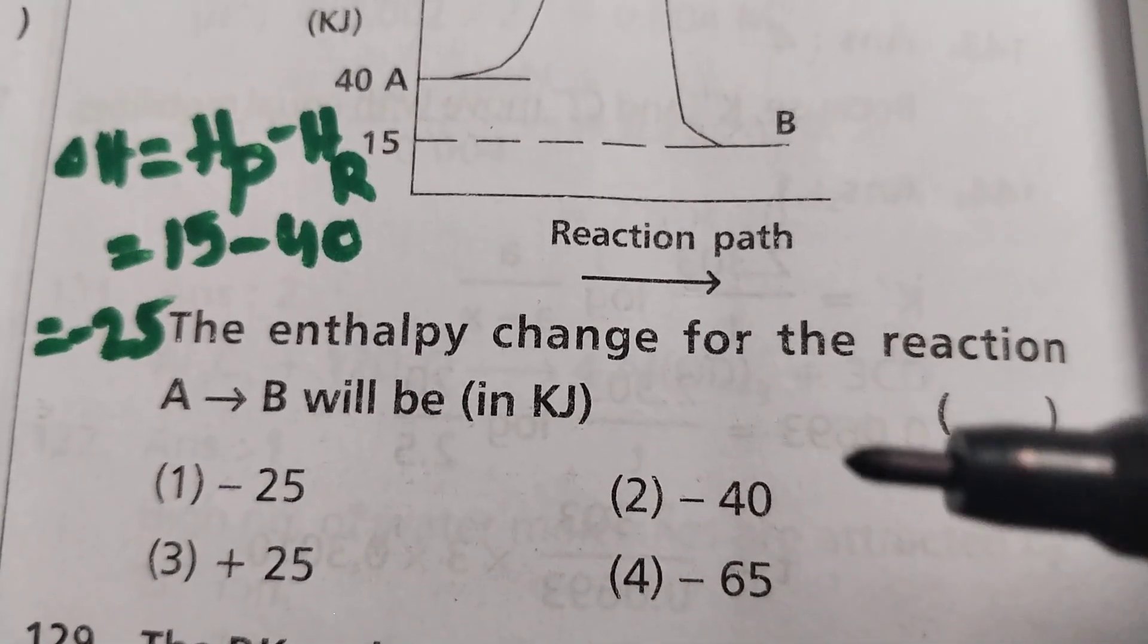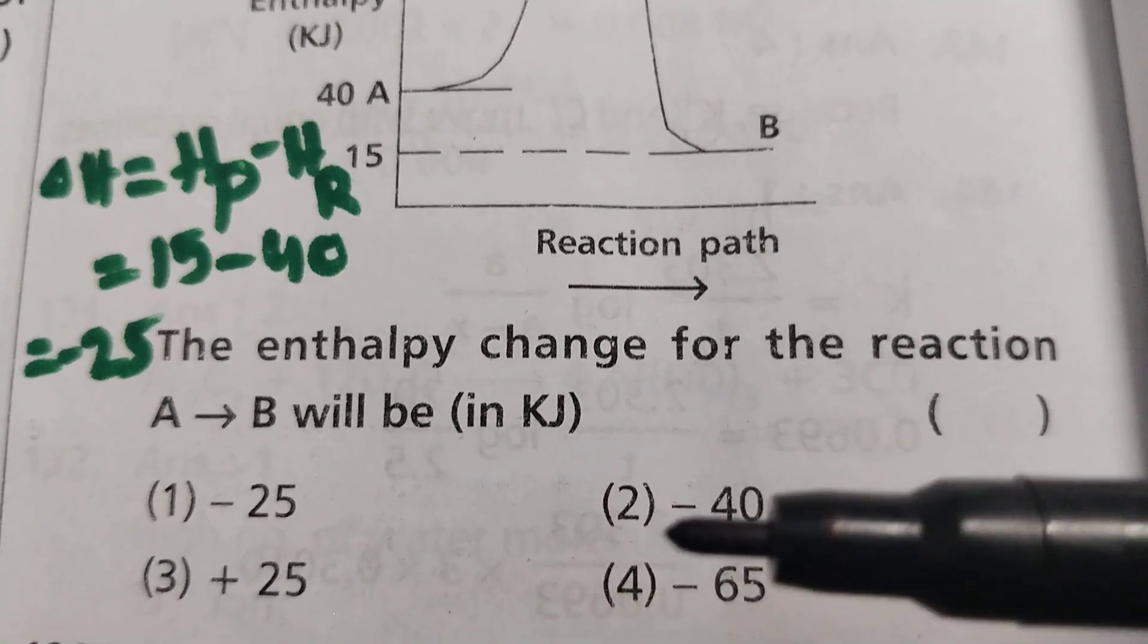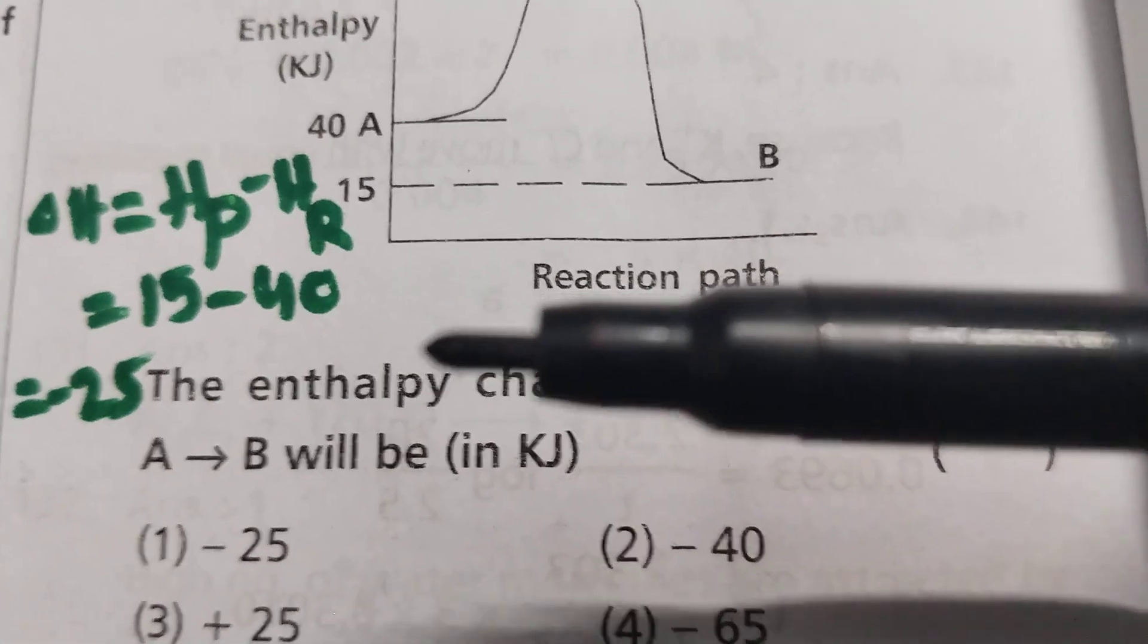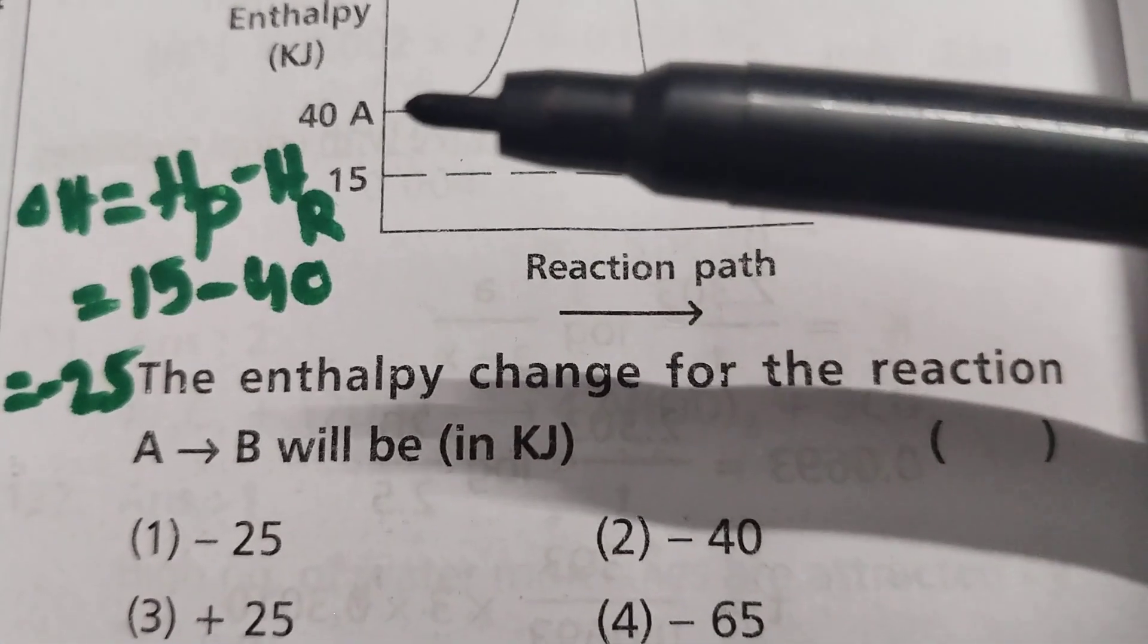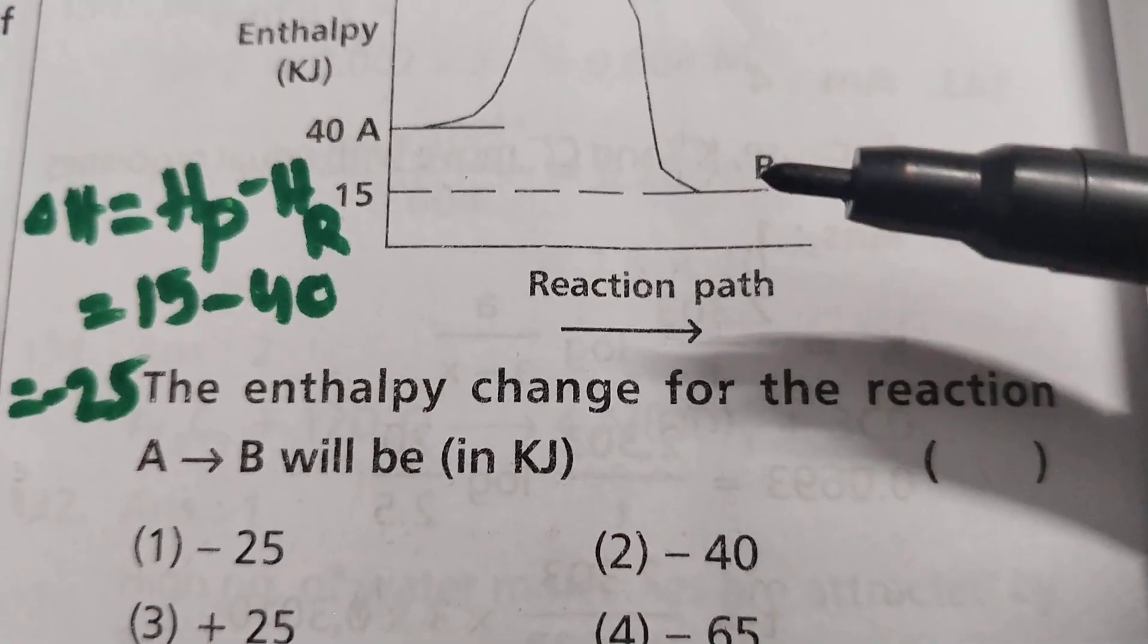The enthalpy change for the reaction A to B in kilojoules: minus 25, minus 40, plus 25, minus 65. You want to know the enthalpy change - it's the difference between enthalpy of the products minus enthalpy of the reactant.